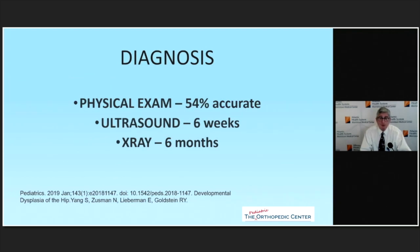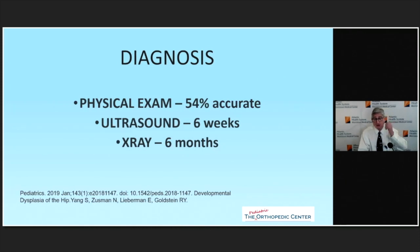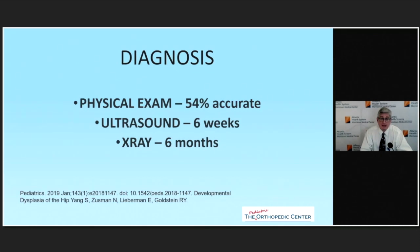At six months of life we use x-rays. We try not to use x-rays before that because before six months of age the femoral heads are not ossified. Ultrasound is very good at delineating the structures of the hip joint, but at six months it's no longer effective because the ossified femoral head blocks visualization of the acetabulum.